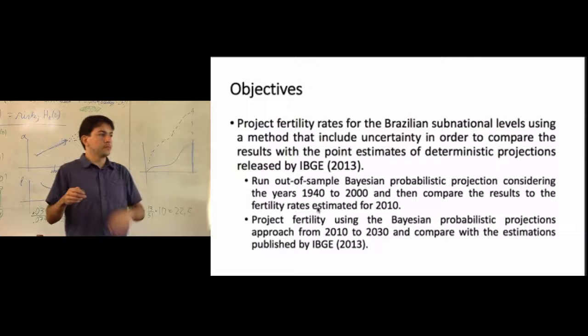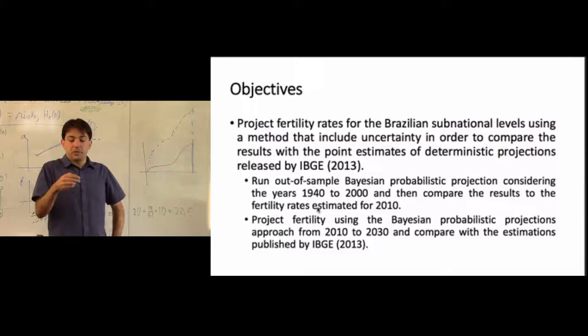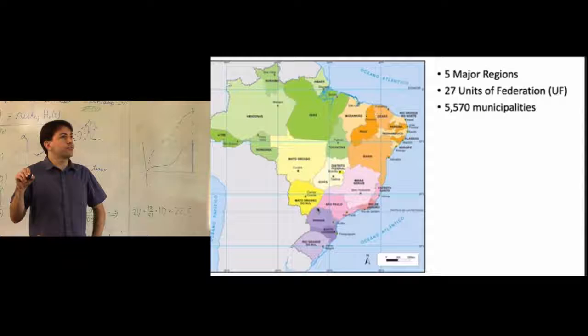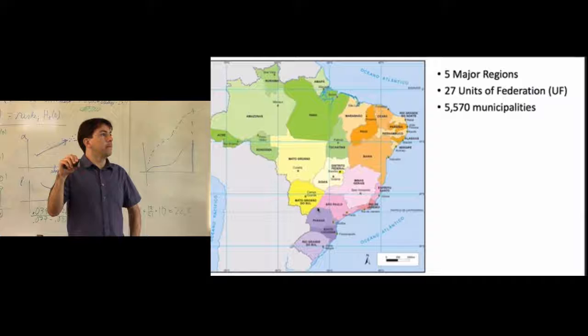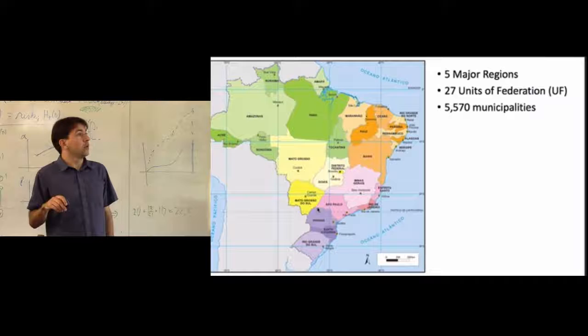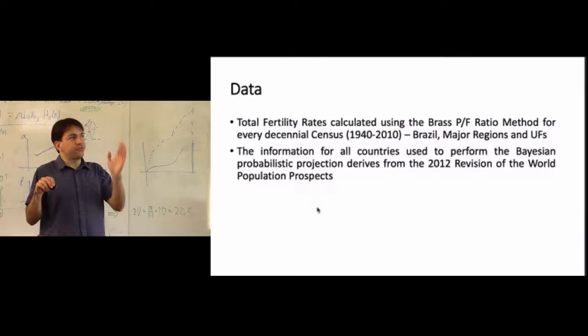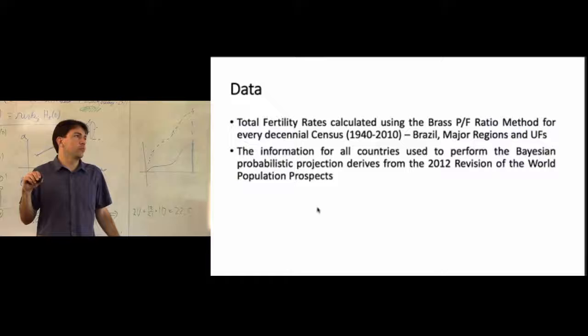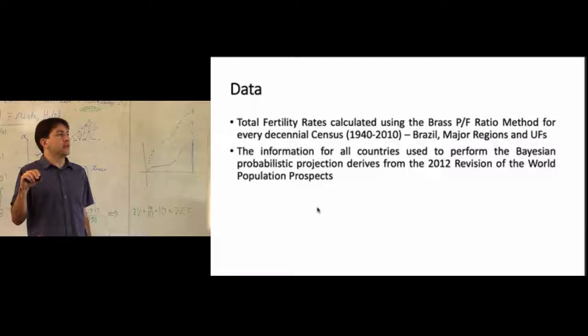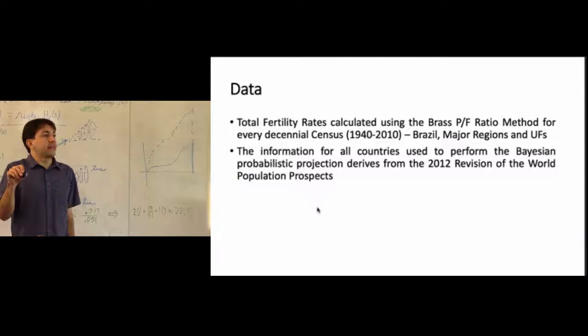Here is the map for Brazil. We have 27 units of federation — 26 states plus the Federal District — and five major regions, which are groupings of those units. The data I use includes fertility information from all Brazilian censuses using indirect estimation methods. For the Bayesian projections, I also use information for all countries derived from the last revision of the World Population Prospects in 2012.